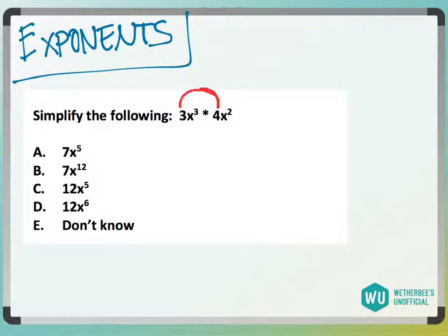But with the actual integers, the 3 and the 4, it's business as usual. 3 times 4 is 12. Just because it's attached to an exponent doesn't mean that 3 times 4 is suddenly 7. So A is gone and B is gone.